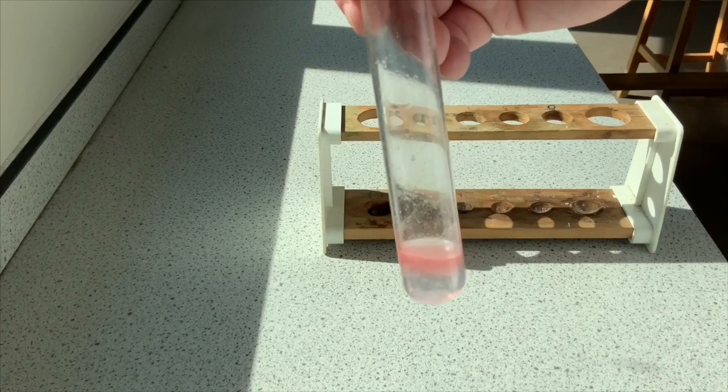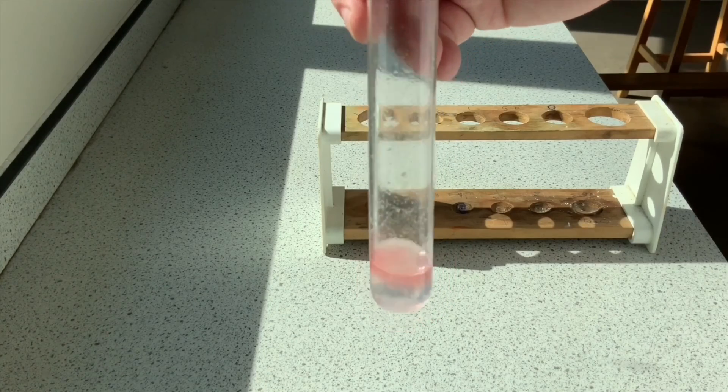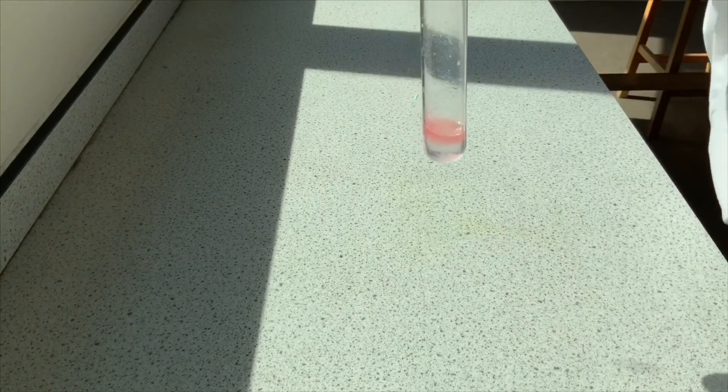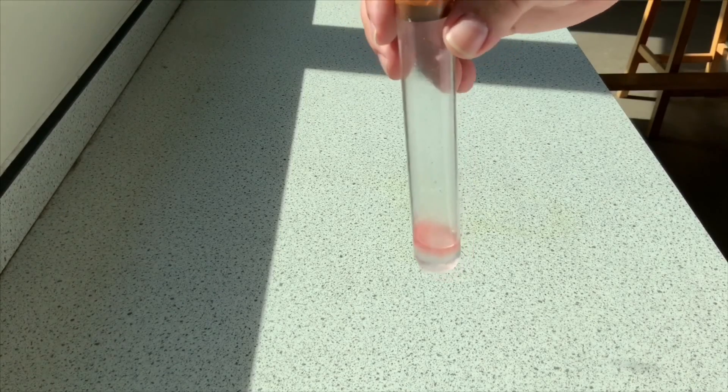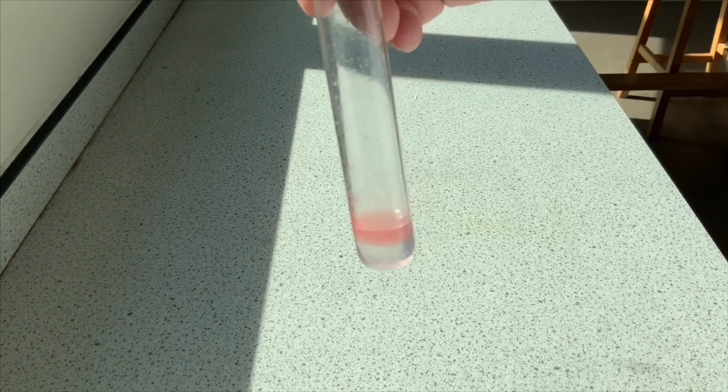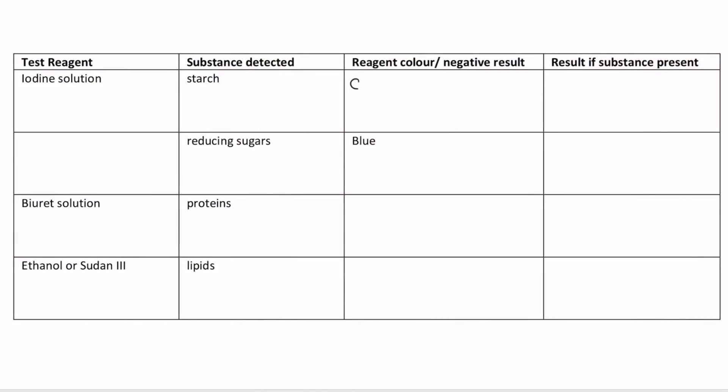So there are our tests. Let's have a look at the table now that you could fill in. There is a worksheet linked to this lesson. First of all, we've got our iodine solution, which detects starch. If we look over here, the original color is an orangey brown, and if starch is present, then we get a dark blue-black color forming.